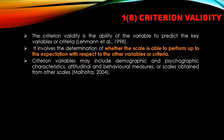Criterion validity is the ability of the variable to predict key variables or criteria. It involves the determination of whether the scale is able to perform up to expectations with respect to other variables or criteria. If the scale is able to match up to those other variables, we can say criterion validity holds. Criterion variables may include demographic and psychographic characteristics, attitudinal and behavioral measures, or scales obtained from other scales — these are derived variables.